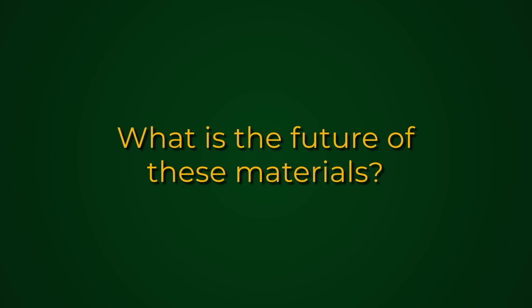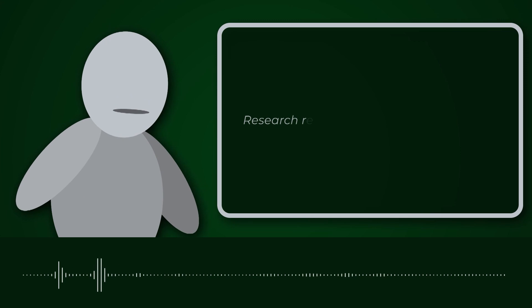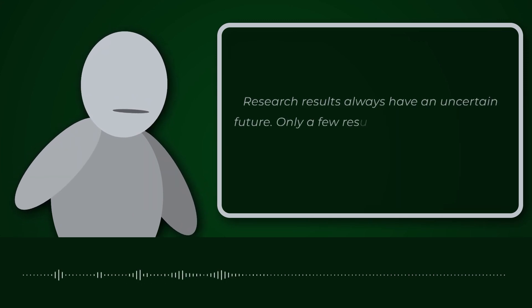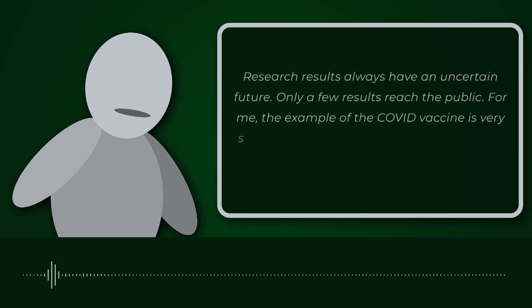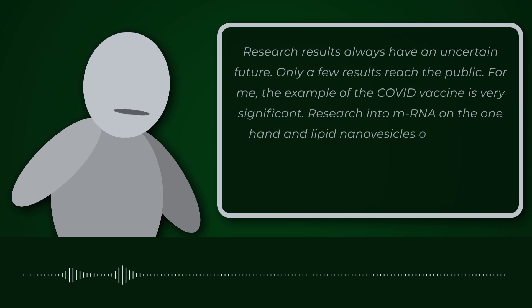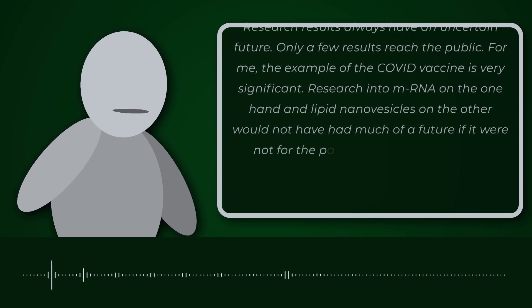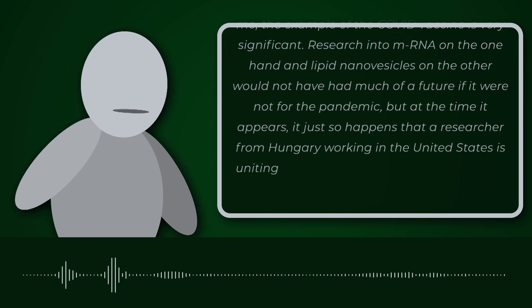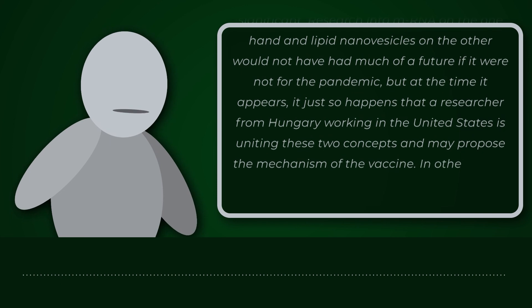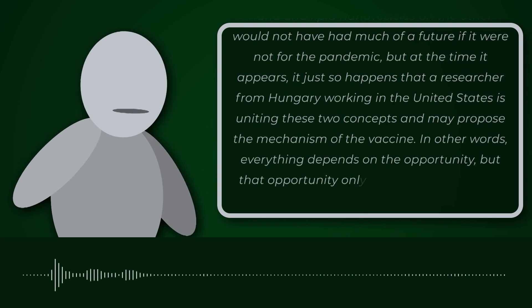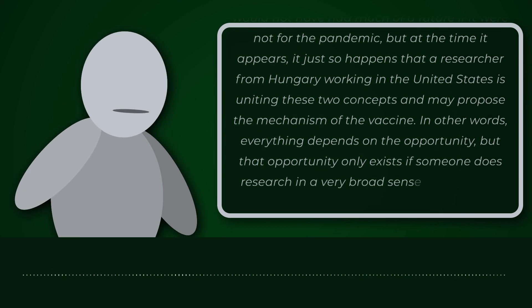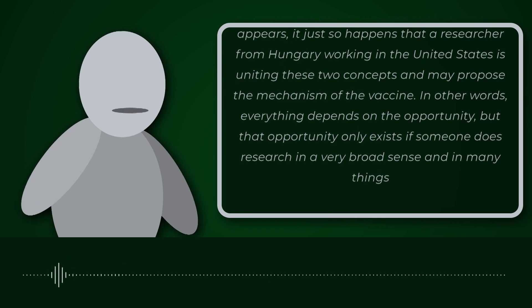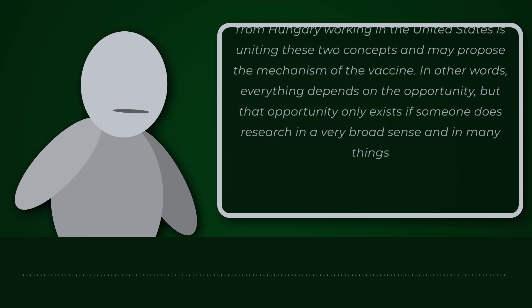But what's truly fascinating is that all of this begins with something as seemingly simple as creating nanopores on the surface of a material. I also asked this member of the research group what he believes the future of these materials holds. His response: research results always have an uncertain future — only a few results reach the public. The example of the COVID vaccine is very significant. Research into mRNA on the one hand and lipid nanovesicles on the other would not have had much of a future if it were not for the pandemic, but at the time it appears, a researcher from Hungary working in the United States united these two concepts and proposed the mechanism of the vaccine. In other words, everything depends on the opportunity, but that opportunity only exists if someone does research in a very broad sense and in many things.